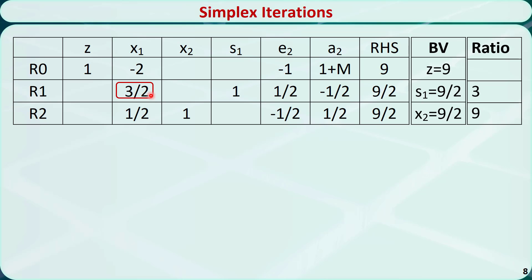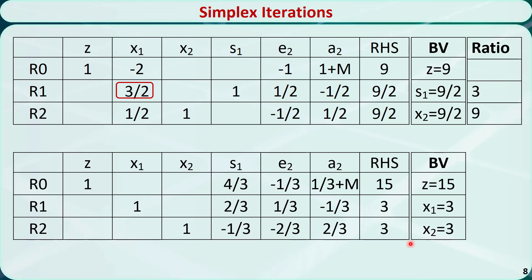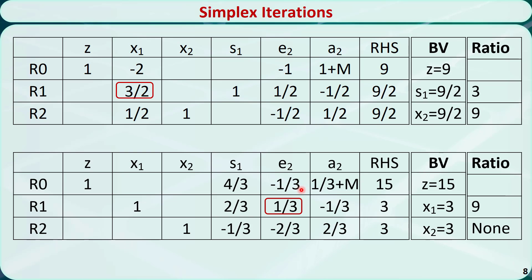We need to change the pivot element to 1 and make it disappear from other rows using elementary row operations. This is the updated tableau. x1 and x2 are basic variables and others are non-basic variables. Setting non-basic variables to 0: x1 is equal to 3, x2 is equal to 3, and z is equal to 15. The entering variable will be e2 because it has the most negative coefficient in row 0. The ratio for row 1 is 9; for row 2 there is none because the coefficient is a negative value. So row 1 is the pivot row.